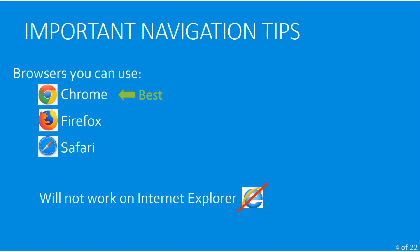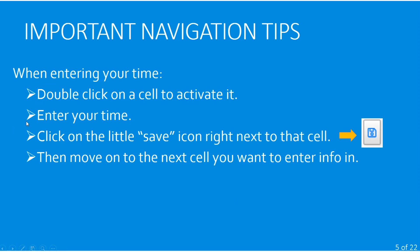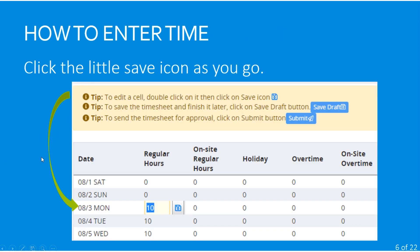When you're entering your time in the timesheet, you're going to double-click on a cell to activate it, enter your time, and then — here's the key — click on the little save icon right next to the cell, then move on to the next cell. Here's what that looks like: the actual timesheet page looks very similar to the timesheets we've always had, so we tried to keep it very familiar. The time categories are mostly the same and work the same way, and there are tips at the top — edit a cell by double-clicking, then save with the icon.